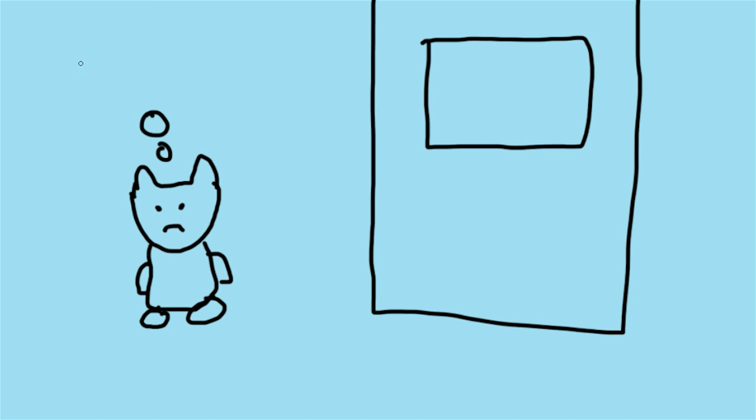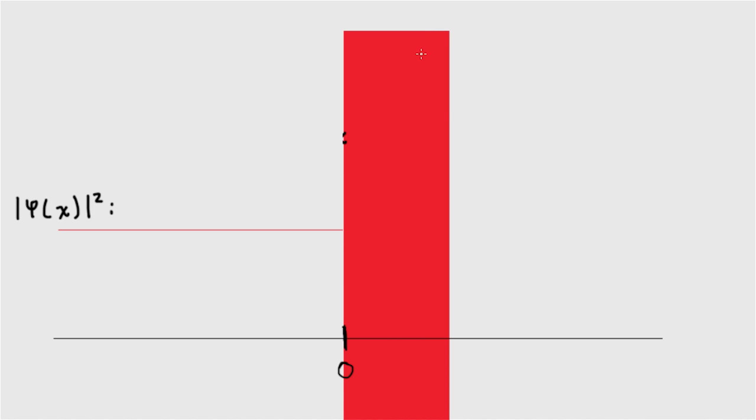In the cat scenario, if the cat door were too high, the cat wouldn't possess enough energy to jump through the door and land outside. Similarly, we can imagine a barrier that opposes a potential energy on the particle that exceeds the particle's own energy. Would this prevent the particle from crossing?